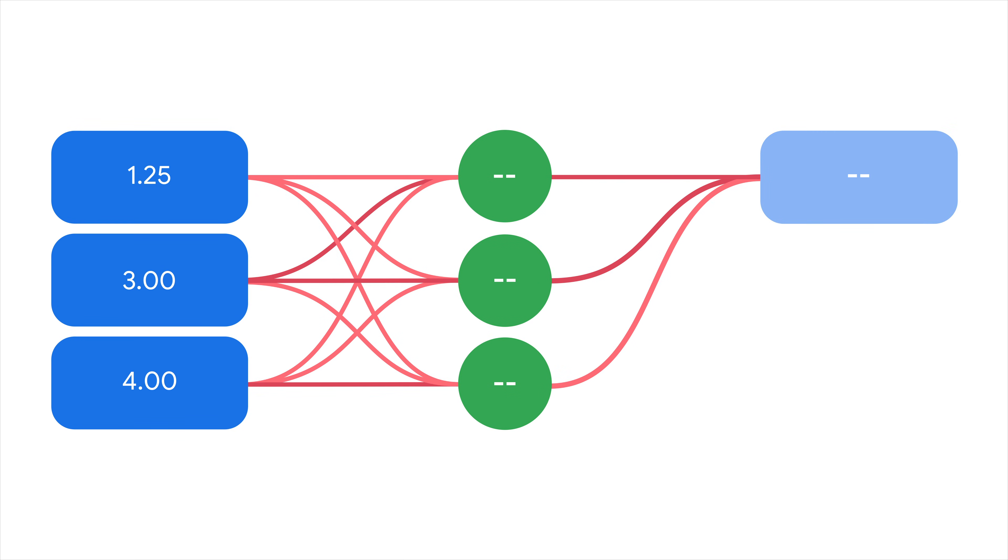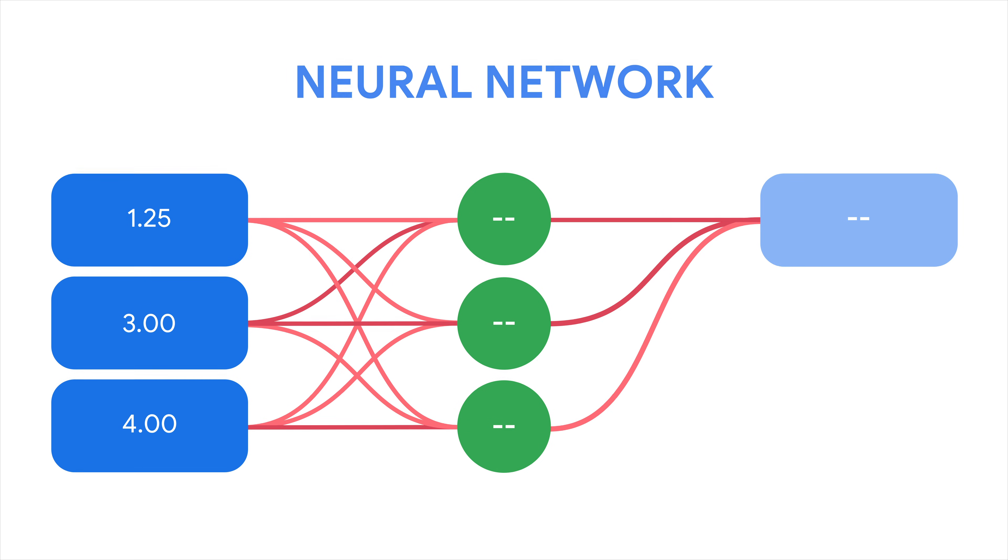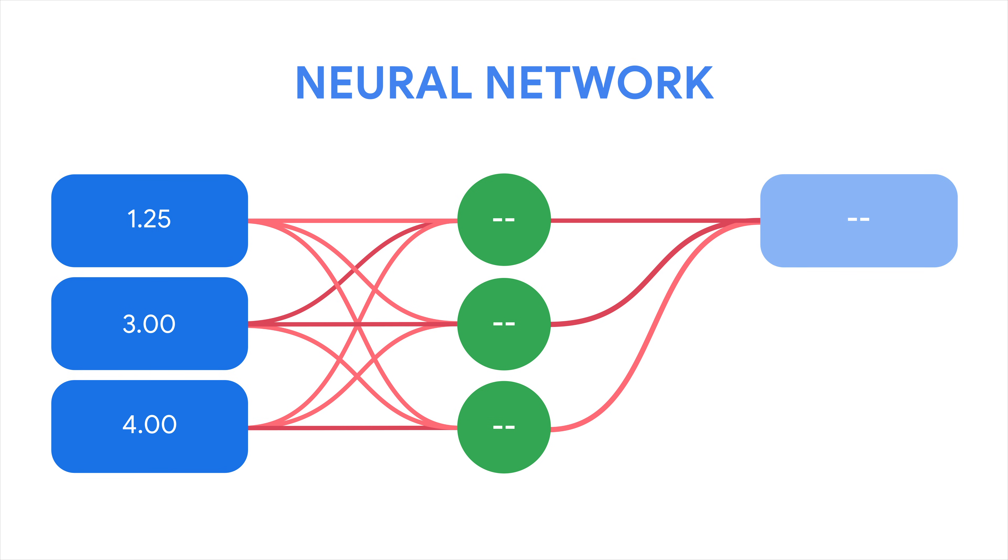What if we added another layer to our model that recombined our inputs? This would increase the number of parameters in our model, allowing us to learn more about the interaction between features. This structure is called a neural network, and that additional layer is called a hidden layer.